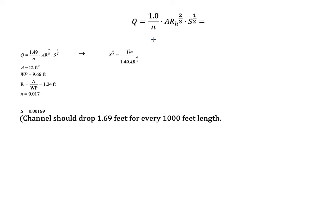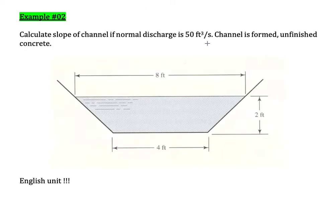We are using British units, so the Manning equation uses (1/n) instead of (1.49/n), which applies for SI units. Please use the correct form of the equation. The question asks us to calculate the slope of the channel.